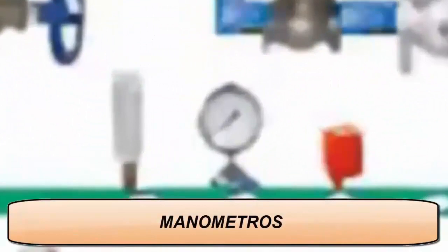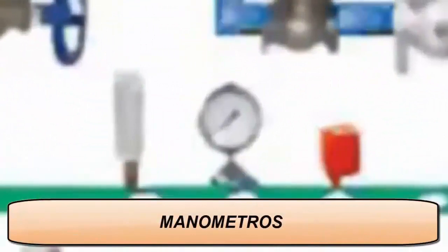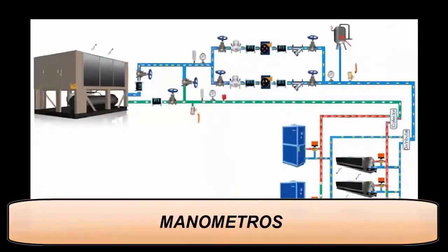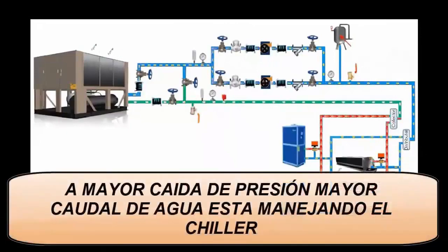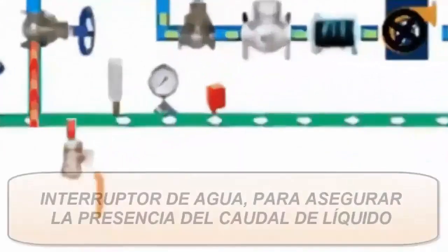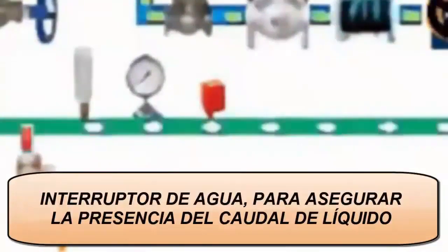2. Manometers are used to measure the pressure of the chilled water flow inside the pipe. They can also report the water flow through the difference or drop in pressure values. For example in the chiller evaporator.